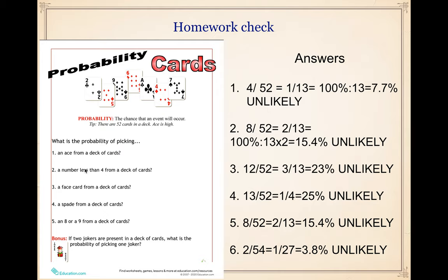Question two: a number less than four from a deck of cards. Now there are eight numbers that are less than four. We write that as eight over fifty-two, or two over thirteen. We divide one hundred by thirteen and divide by two to get fifteen point four percent chance, which is still unlikely.